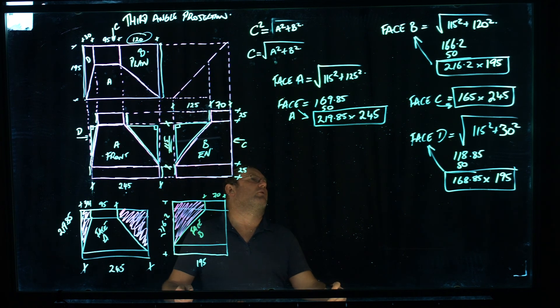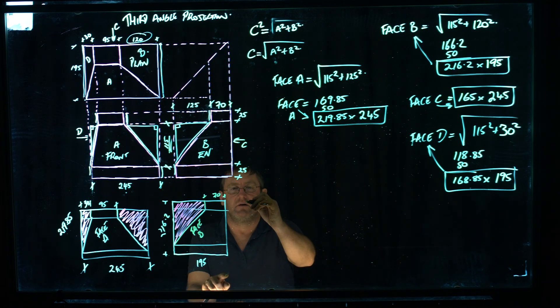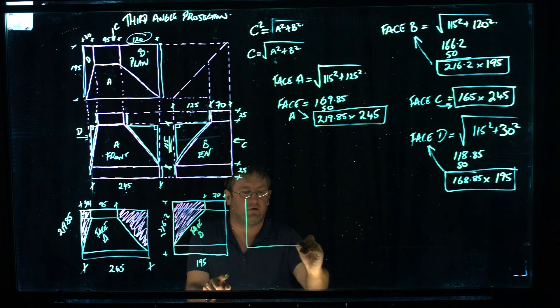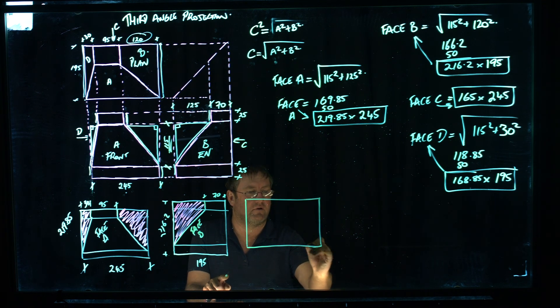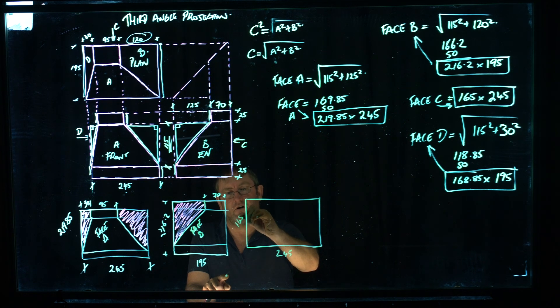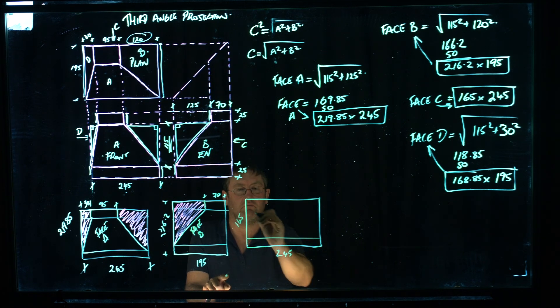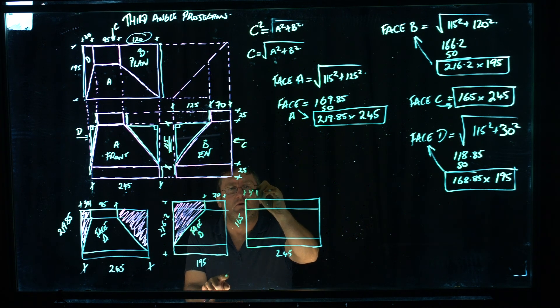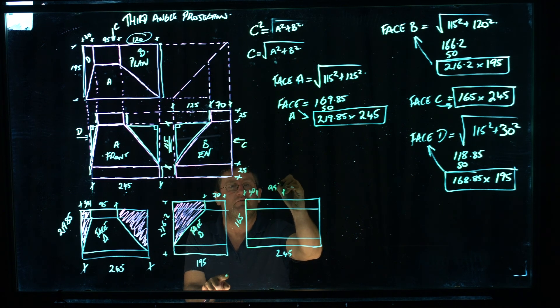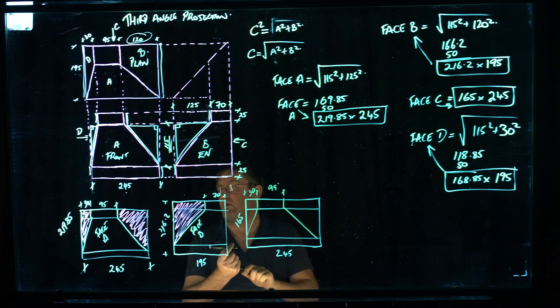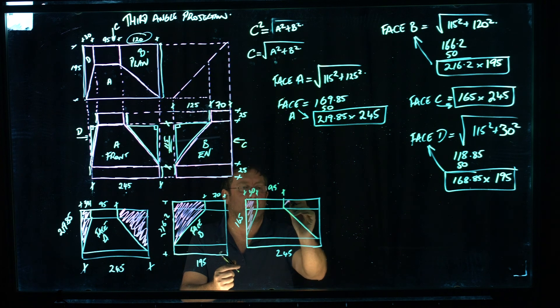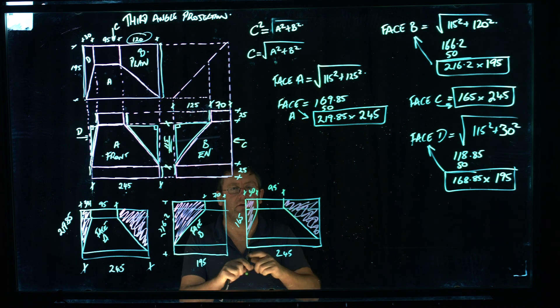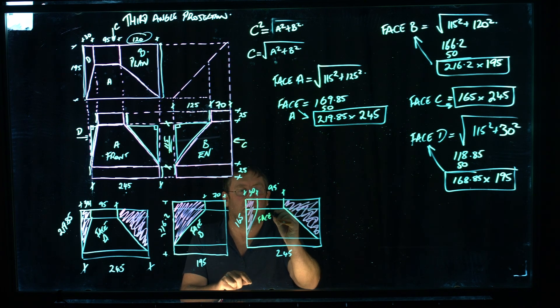Face C. We've got 165 by 245. 245, 165 high. 25 on the bottom, 25 on the top. To make sure I'm looking at the right piece. Once again this is 30mm. This piece here is 95. So down here, across here, down here, across here. And once again, we are chopping out this portion here. And what did they say? That's face C. Face C.